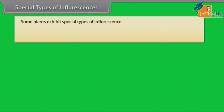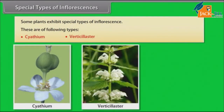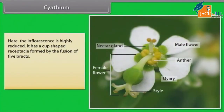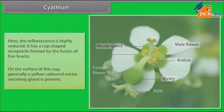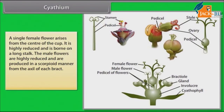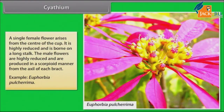Some plants exhibit special types of inflorescence. In cyathium, the inflorescence is highly reduced. It has a cup-shaped receptacle formed by the fusion of five bracts. On the surface of this cup, generally a yellow-colored nectar-secreting gland is present. A single female flower arises from the center of the cup; it is highly reduced and is born on a long stalk. The male flowers are highly reduced and are produced in scorpioid manner from the axil of each bract. Example: Euphorbia pulcherrima.